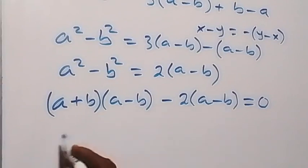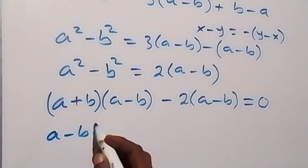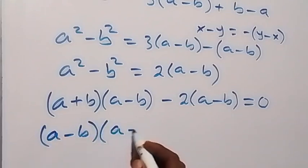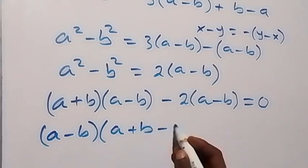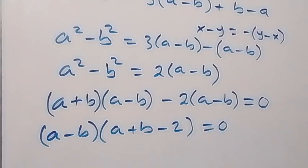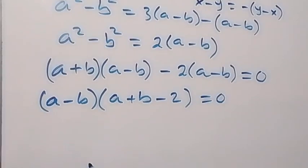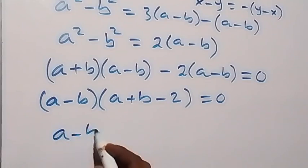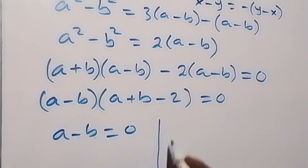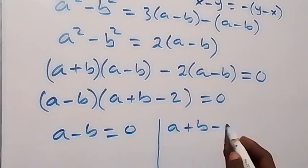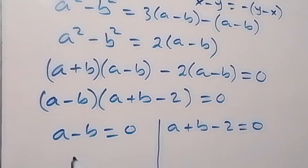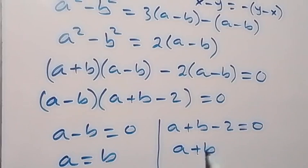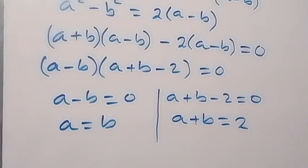We can factor out (a minus b), so we have (a minus b) into bracket (a plus b minus 2) equals 0. Then we have two possible cases: a minus b equals 0, or a plus b minus 2 equals 0. From the first case, a equals b; and from the second case, a plus b equals 2.